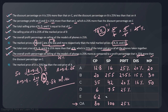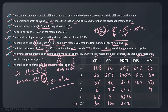Subtracting all known selling prices from 100: SP of E = 100 − 42 − 16 − 25.5 − 7.5 = 9. On cost price 6.2, there is a profit of 2.8, which is approximately 45.1%. Now for the last statement — it was written incorrectly, but the correct statement is: the marked price of D equals the selling price of E, which is 9. So marked price of D = 9. On 9, there is a discount giving selling price 7.5, so discount = 1.5, and 1.5 is 16.66% of 9.